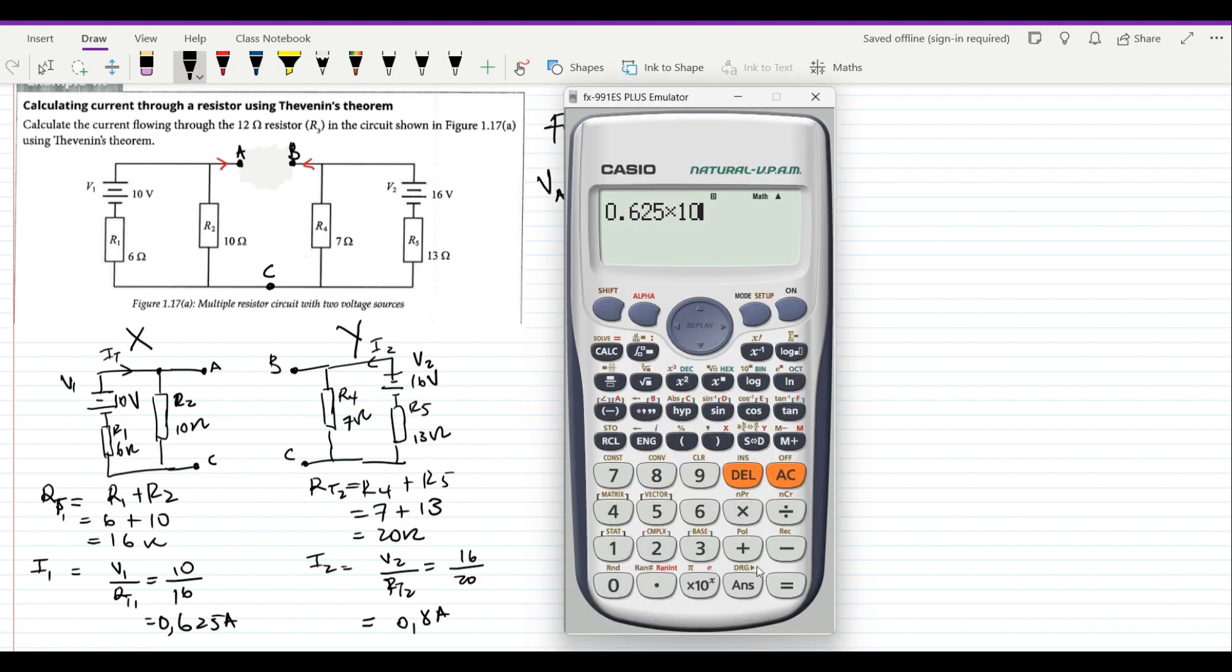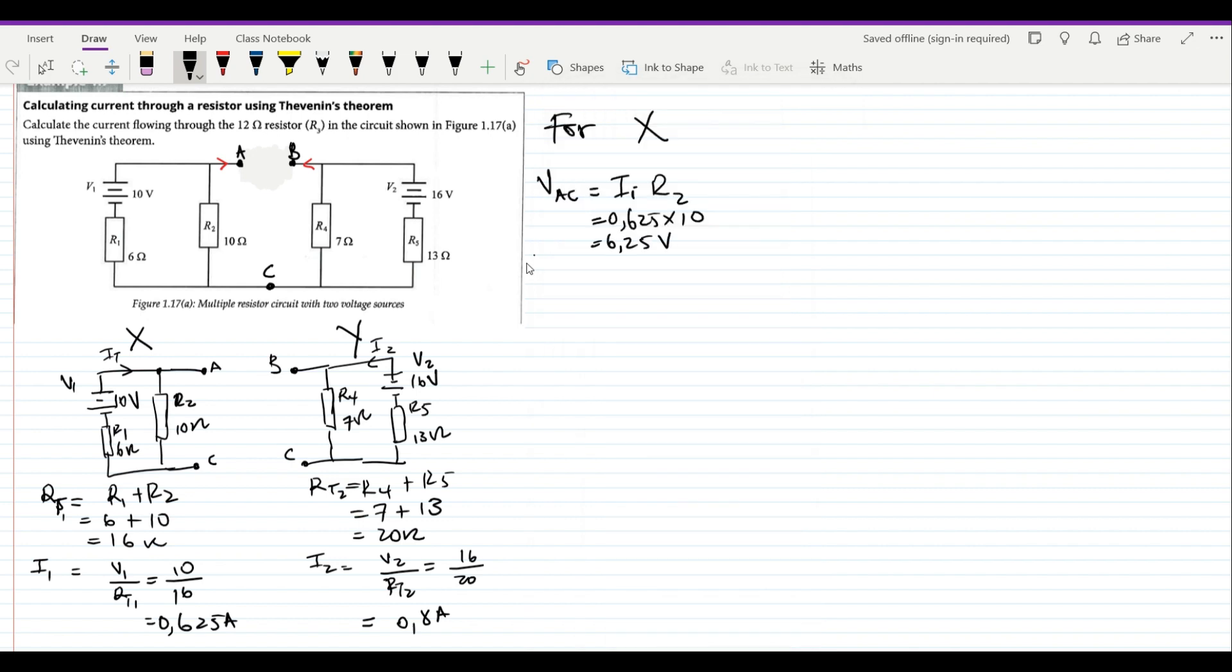We again come back to calculate for circuit Y. Circuit Y, it's Vbc which is I2 times R4. Same thing applies: when you connect a voltmeter here it will give you readings of the voltage across the 7 ohm resistor, which is 0.8 multiplied by 7. You punch that in your calculator, this should give you 5.6 volts.